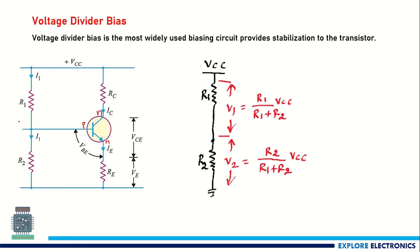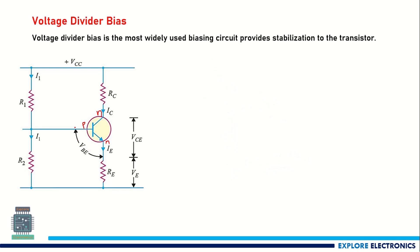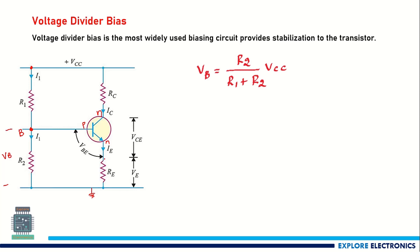This voltage divider rule applies between R1, R2, and VCC, so that we can make the base-emitter junction forward biased. In this circuit, if we take this as point B since it is the base, we apply the voltage divider rule to find VB. VB equals R2 divided by the total resistance (R1 plus R2), multiplied by VCC. This positive voltage at the base makes the base-emitter junction forward biased.